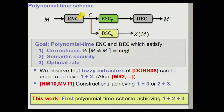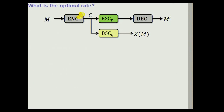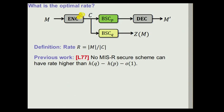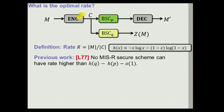Our work is the first to provide a scheme that achieves all three properties. The optimal rate for binary symmetric channels: it was shown already in the 70s that no scheme can achieve rate higher than H(q) minus H(p) minus something vanishing, where H is the binary entropy function. Our scheme achieves exactly this rate, which means it is optimal for any security notion.